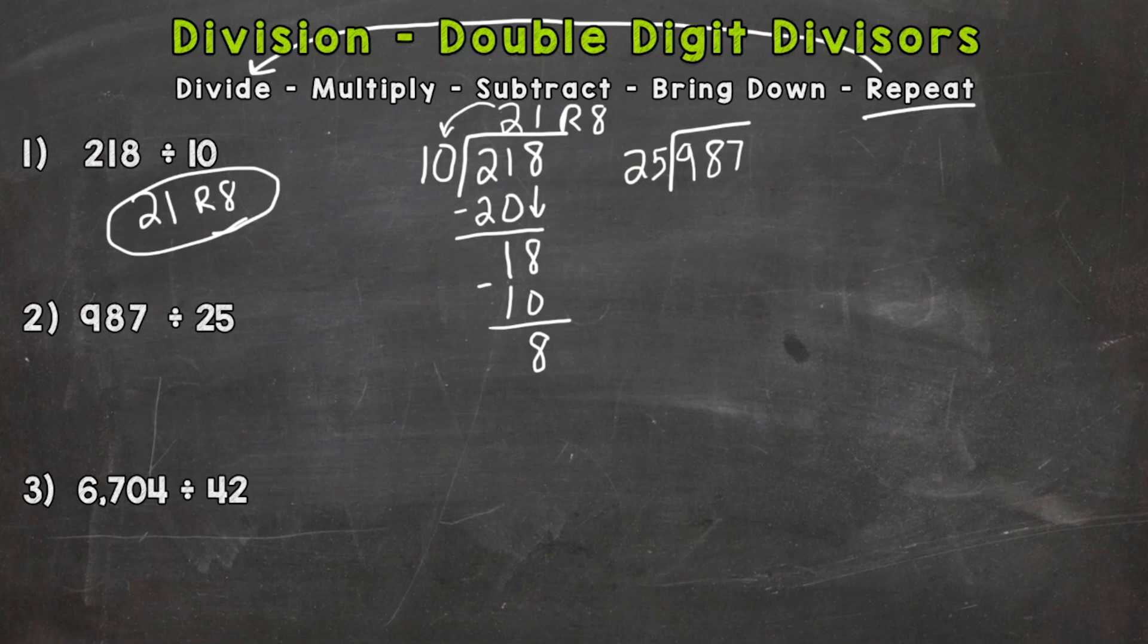25, 2 times 25 is 50, 3 times 25 is 75, and 4 times 25 is 100. So 4 is too many, so we're going to have to scale back, and we can pull 3 whole groups of 25 out of 98. Now we need to multiply: 3 times 25 is 75. Subtract, and we get 23.